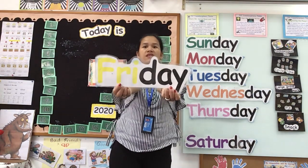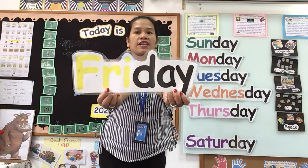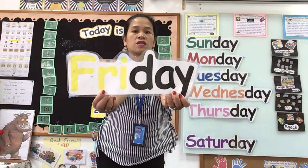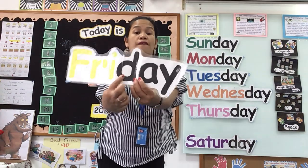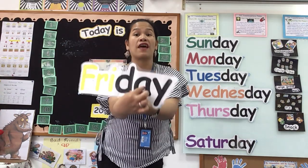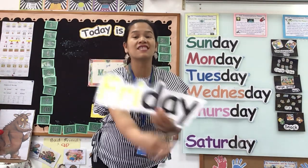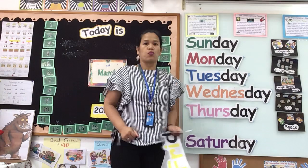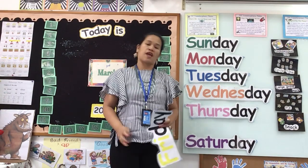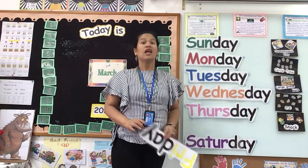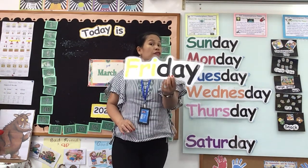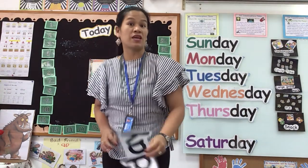How many letters are there in the word Friday? Friday. One, two, three, four, five, six. Very good. So what numbers can you put together to make six? Right, three and three make six.